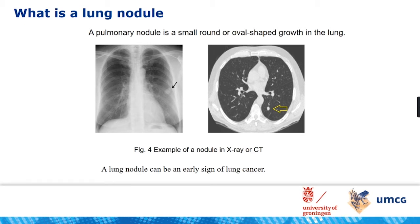The first project I would like to talk about is lung nodule detection. A lung nodule is a small round or oval-shaped growth in the lung. Here are some examples of a nodule in X-ray or CT. A lung nodule normally ranges from 5 mm to 30 mm, and it can be an early sign of lung cancer. Therefore, to detect early-stage lung cancer, accurate detection of lung nodules is important.